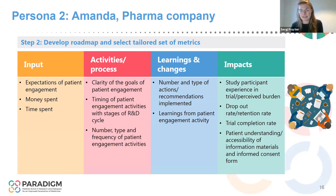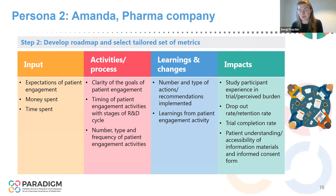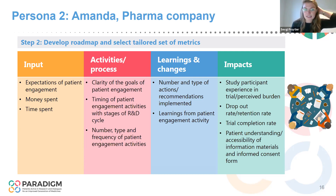What I'd like to show you here is the metrics that align to their objectives. On the impact side, you could see they measure study participant experience — for example, doing a survey among participants in the clinical trial. They look at the dropout rate, the retention rate, and the trial completion rate. They also specifically added a metric on patient understanding of the accessibility of the information material, because their initiative specifically focused on the informed consent process. She also decides to measure money and time spent because she was interested in how to use her resources optimally. Those are some examples of metrics tailored to what they would like to know.